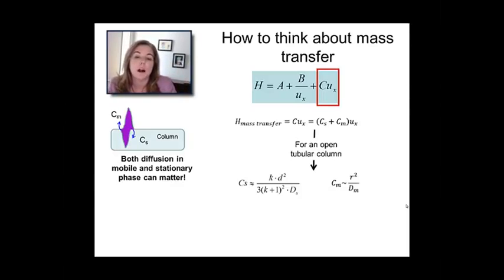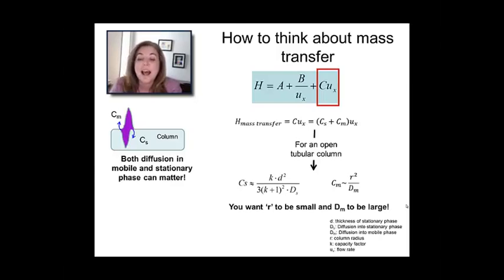For an open tubular column, both have to be considered. The term over on the left, you see that the thickness of the stationary phase, or D, matters, as does the diffusion in the stationary phase. But you'll also see a new term, which is C sub m, which is related to the diffusion into the mobile phase from the stationary phase. That's a really interesting one. It basically says, as the inner diameter gets bigger, then you have to diffuse more to fully equilibrate with the mobile phase. In fact, the diffusion into the mobile phase matters. You want rapid diffusion for that to be a minimum.